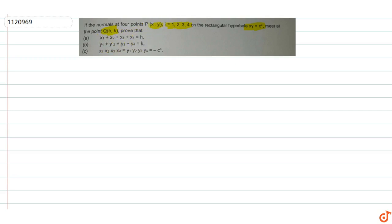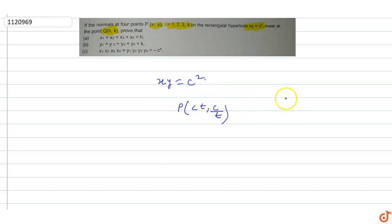In this question, if the normals at four points P(xᵢ, yᵢ) where i from 1 to 4 on the rectangular hyperbola xy = c² meet at point Q(h, k), prove that x₁+x₂+x₃+x₄ = h. Let's suppose the rectangular hyperbola equation xy = c². A point on this hyperbola is P(ct, c/t). The coordinates are xᵢ, yᵢ where i from 1 to 4.